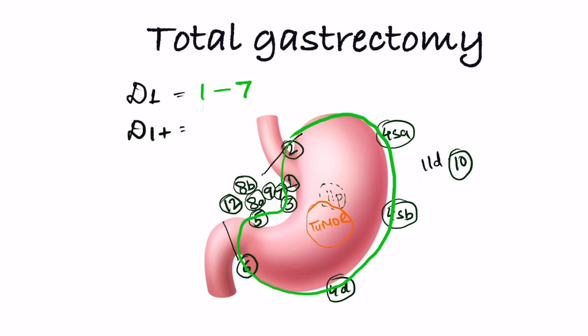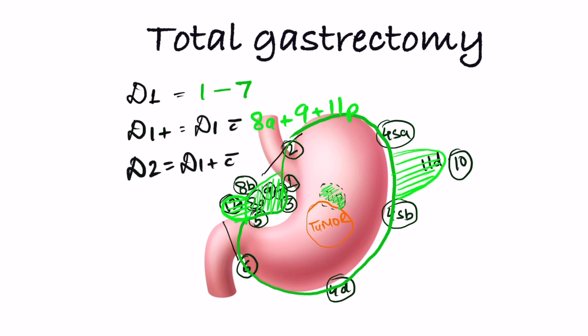After D1 in total gastrectomy, the next closest nodes are 8A, 9, and 11P. Hence D1 plus is D1 dissection with nodes 8A, 9, and 11P. Beyond D1 plus, the next closest nodes are 11D and 12A. So D2 is D1 plus with removal of nodes 11D and 12A. D0 means lymphadenectomy less than D1.